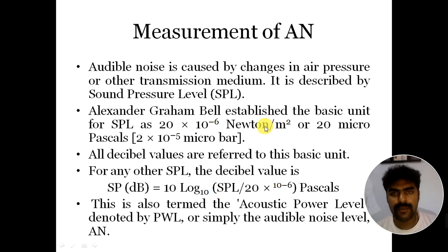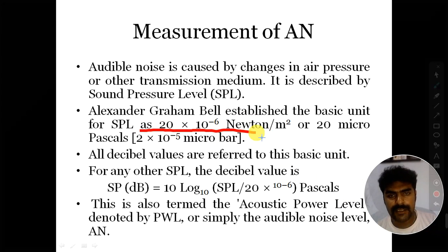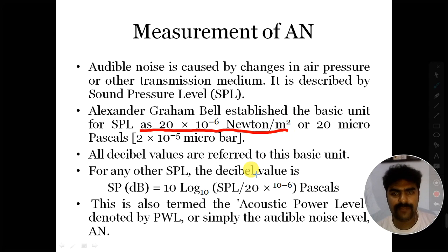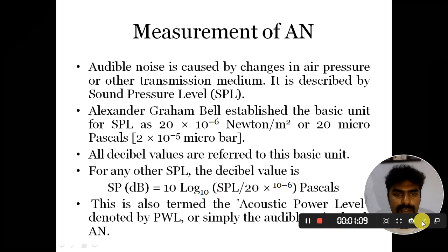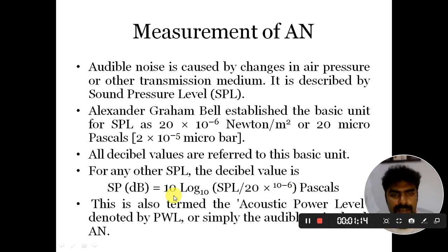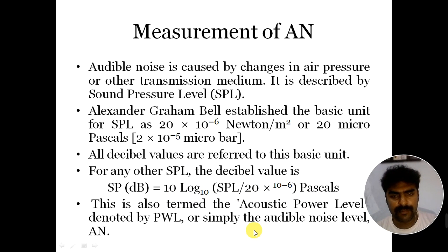As I have already discussed in the previous video, audible noise is mainly caused by the movement of positive and negative charged ions. It is described by the sound pressure level, and Graham Bell already established the basic unit for this sound pressure level — 20 × 10⁻⁶ Newton per meter square — and all decibel values are referred to this basic unit. For any other sound pressure level, the SPL can be written as 10 × log₁₀(SPL / 20 × 10⁻⁶ Pascal). This is also termed as acoustic power level, and it can be denoted by PWL or simply audible noise level.